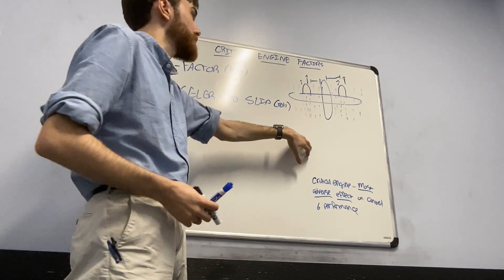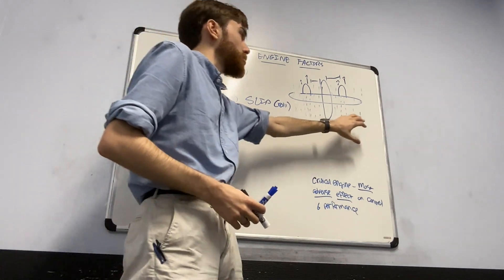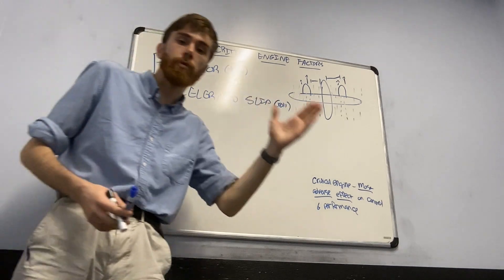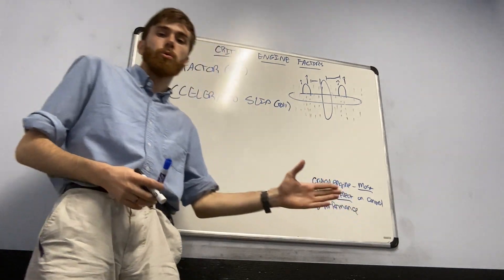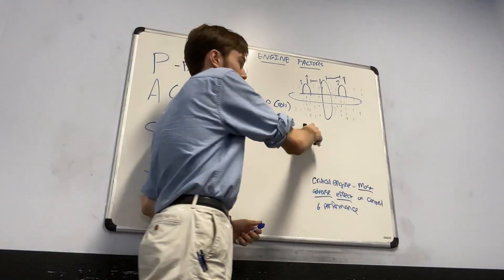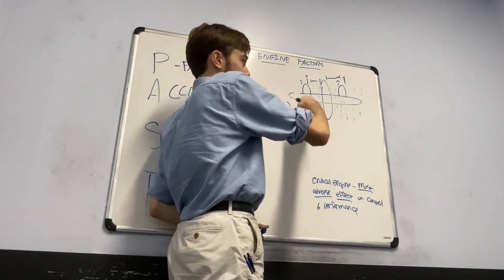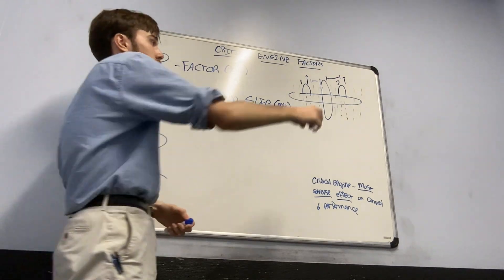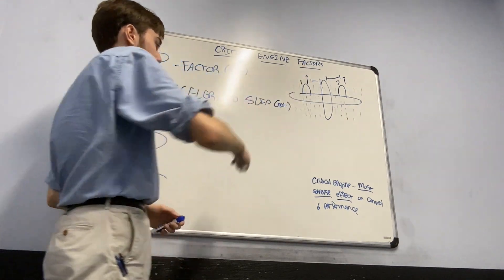So if you lose the right engine, there's more of a rolling force towards the left than if you lose the left engine and roll towards the right — again, due to that longer moment arm on the right-hand side.